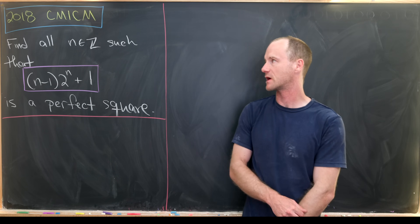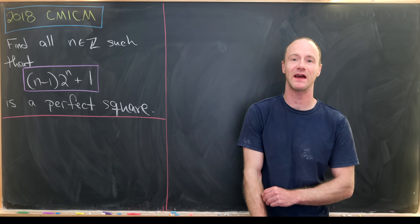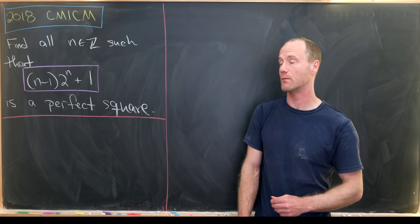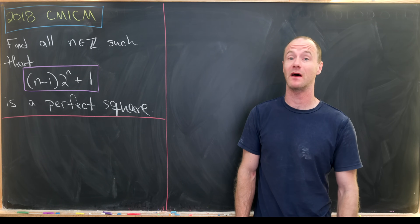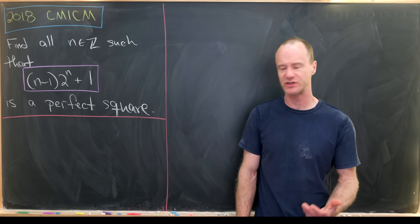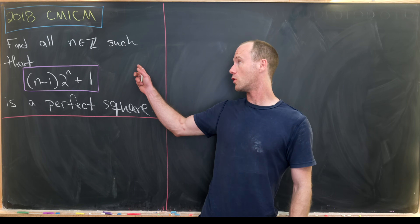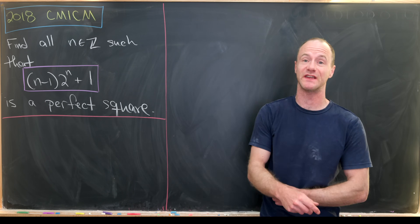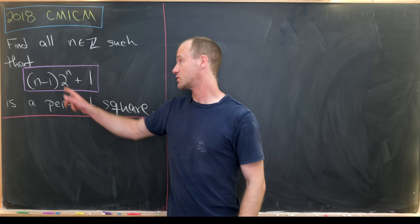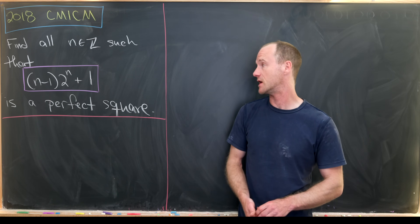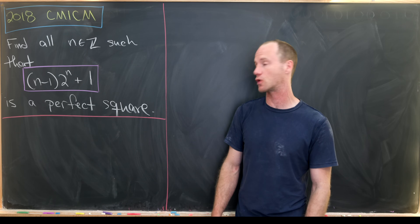Today I've got a nice number theory problem that comes from the 2018 CMU math contest given by Carnegie Mellon University. Our goal is to find all integers n such that (n minus 1) times 2 to the n, plus 1, is a perfect square.